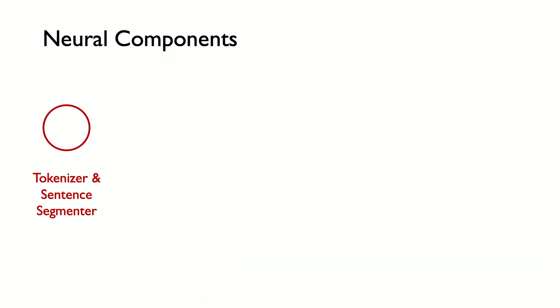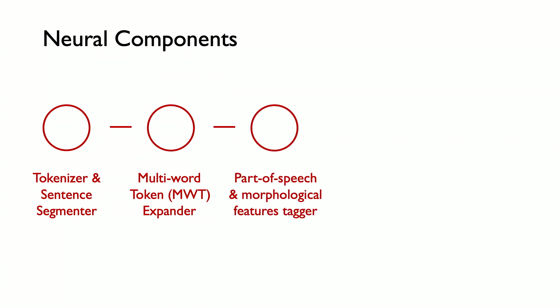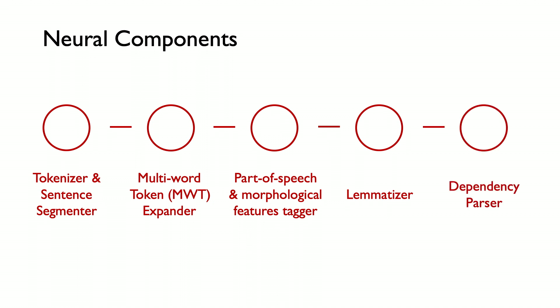To make things easier to understand, let's break down the system and take a look at each neural component individually. In the current version of the library, there are five main neural network components: the tokenizer and sentence segmenter, which splits input text into tokens and sentences; a multi-word token expander; a part-of-speech and morphological features tagger; a lemmatizer; and the dependency parser that constructs a tree structure representing the grammatical structure of the sentence.